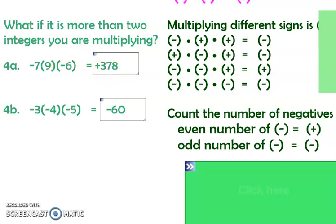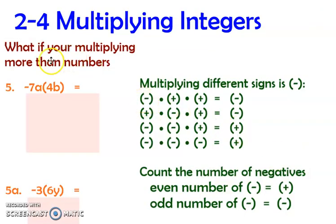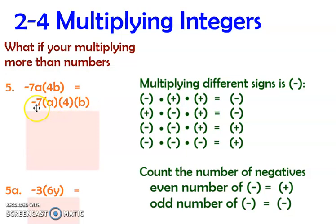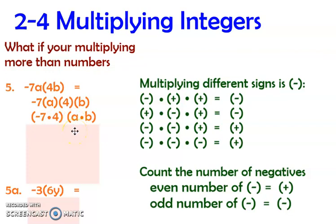We can also do this with variables. If we know there's an odd number of negatives, the answer is negative — I see just one negative here, so the answer is negative. Since these are all multiplying, we can use the commutative property to put the numbers together and the variables together. So negative 7 times 4 is negative 28, and a times b stays as ab. The answer is negative 28ab. Don't write a times sign between the variables — when numbers and letters are attached, you're already multiplying.